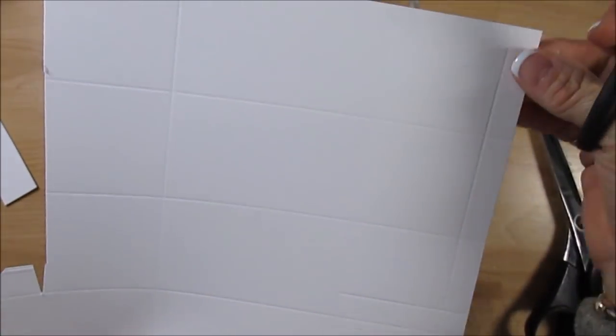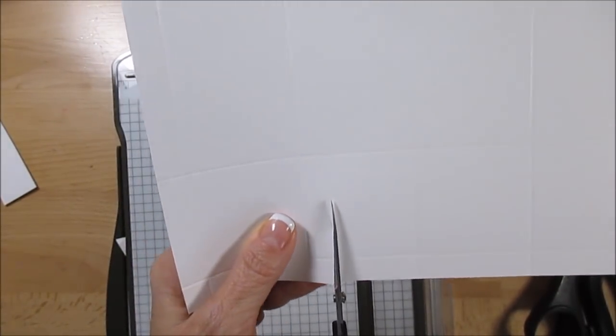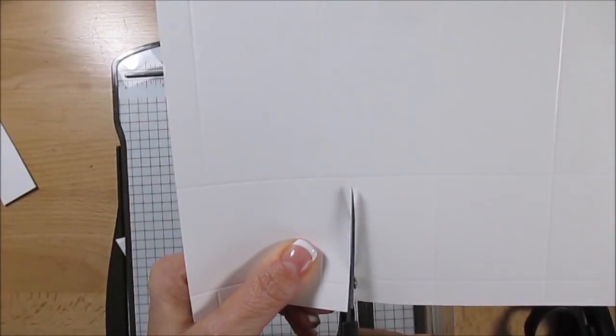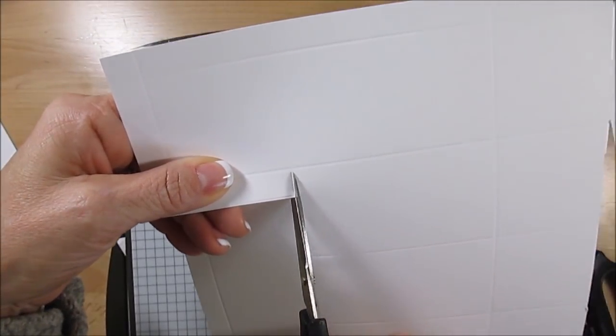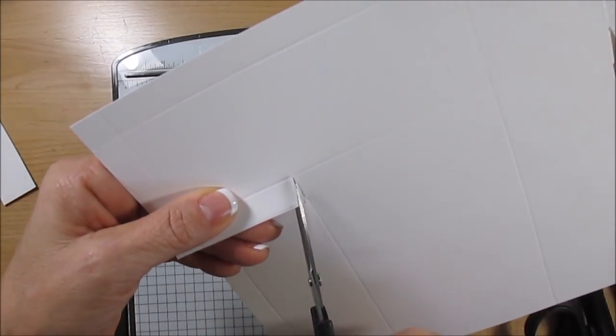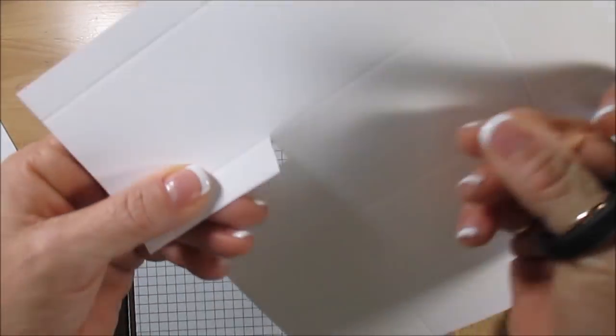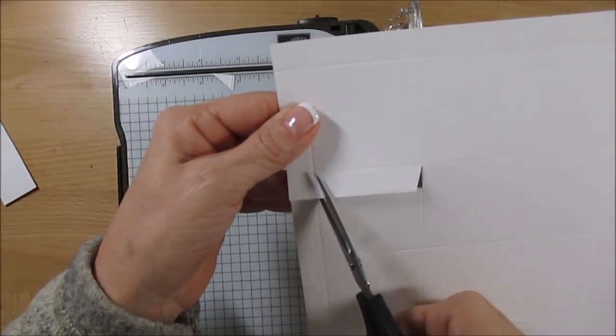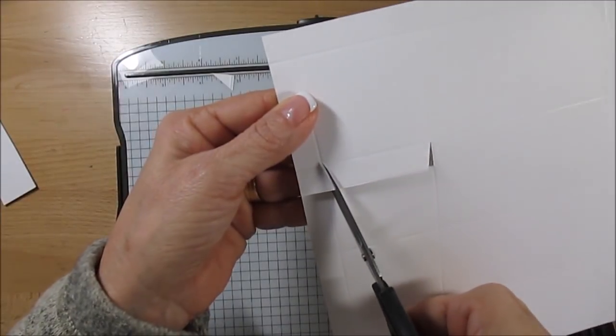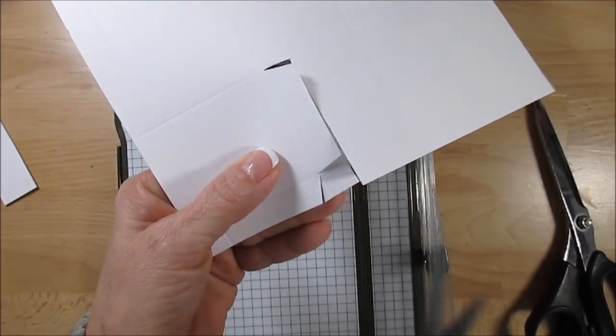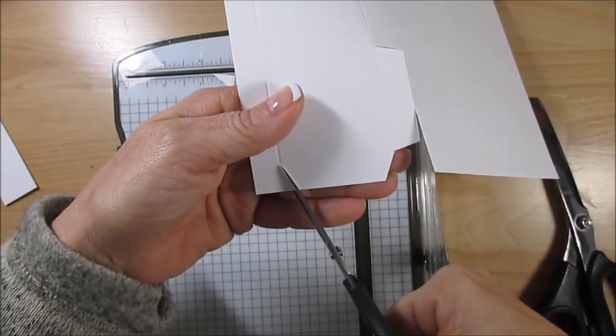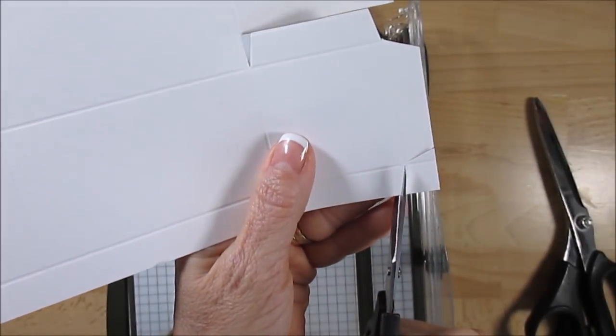Now over here we're going to cut just a little V to remove that little, make it easier for when we're going to do our fold there. Now we're going to do some trimming over here. Over here, the 5.5 score there, you're going to cut this straight down. Again we're going to do a little V.